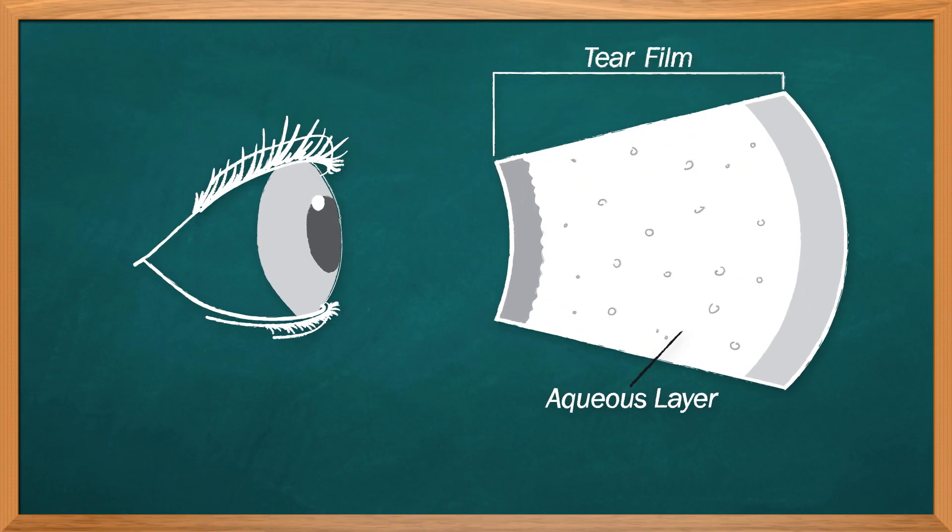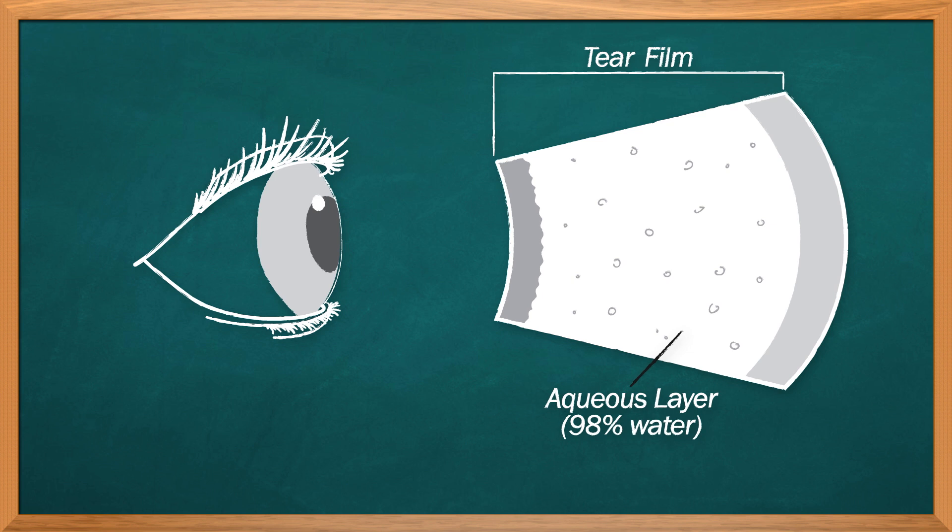The aqueous component is the operative one. It nourishes, lubricates, and flushes your eyes' cells. It also smooths over microscopic lumps and bumps on the surface of your eyes, creating a smooth lens that optimizes light transfer into your retina.